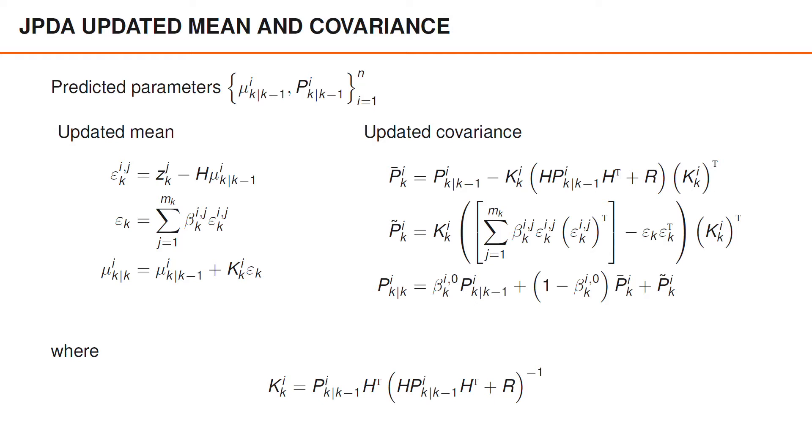So it can be shown that this update for the mean and the covariance matches the mean and the covariance of the marginal posterior mixture density. But the mathematics of this are quite tedious, so we will not show this in this video.